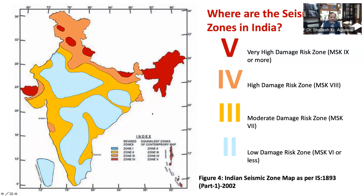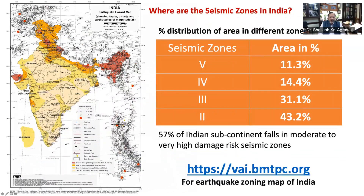This national seismic zoning map presents a large-scale view of seismic zones in the country. Local variations of soil type and geology cannot be represented at this scale. Therefore, whenever we design an important structure or deal with important projects such as nuclear power plants or dams, site-specific seismic hazard analysis is to be done rather than relying solely on the seismic zoning map of India.